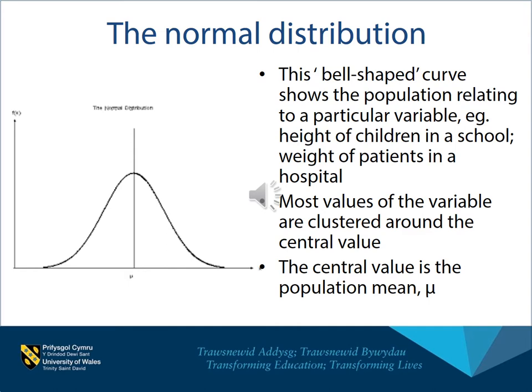In inferential statistics we basically try to find if there are links between variables or differences between variables. This depends on thinking about the population that you have in mind and trying to ascertain whether the sample that you're looking at is actually rather similar to it or rather different.